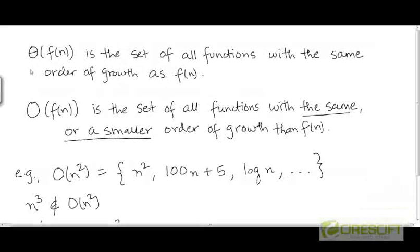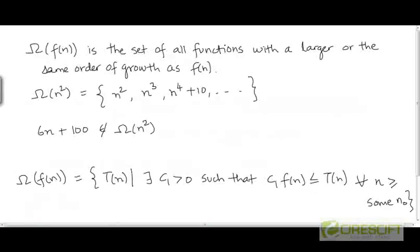Just as we defined big theta of f as the set of all functions with the same order of growth as f, and just as we defined big O as the set of all functions with either the same or a smaller order of growth than f, we can define big Omega as the set of all functions with a larger or the same order of growth as f.